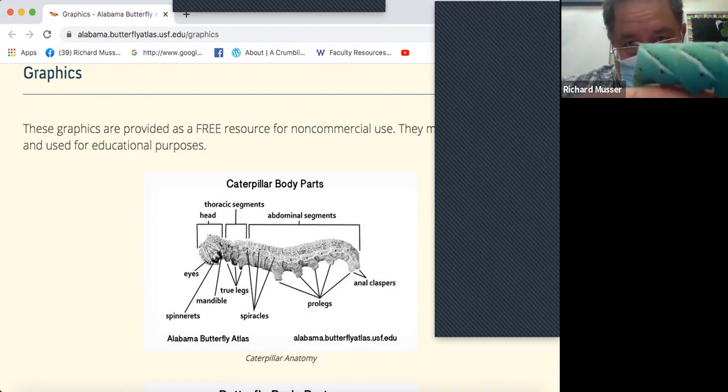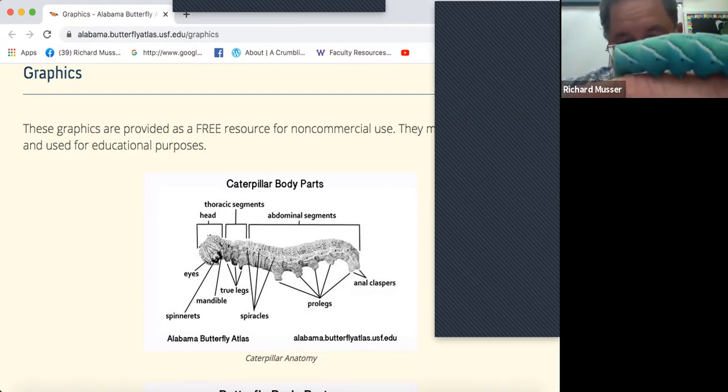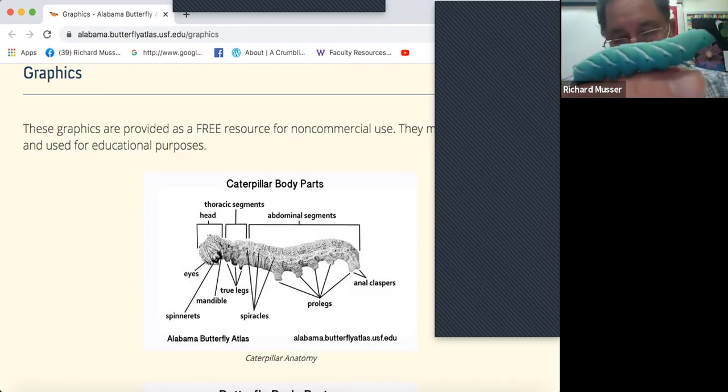There's all sorts of speculation what that horn might be involved with, but one idea is maybe a little bit of a defensive mechanism. We know that Manduca sexta has these stripes, which is a very famous looking caterpillar.